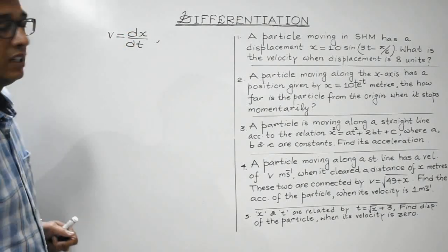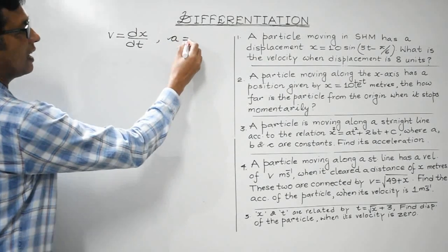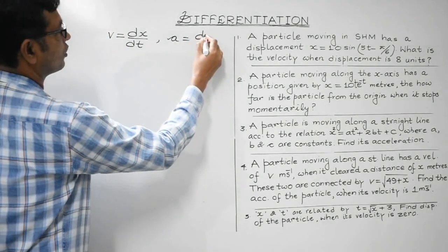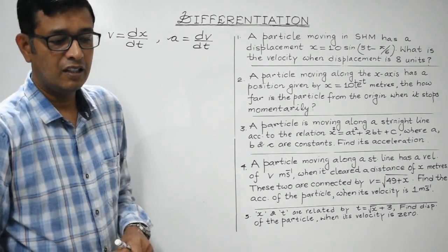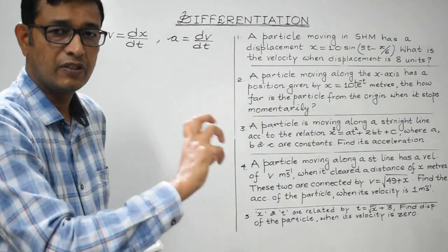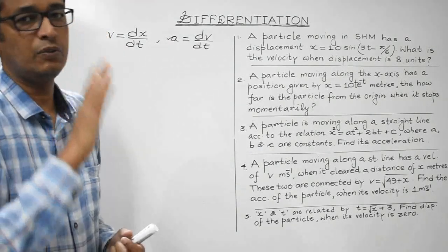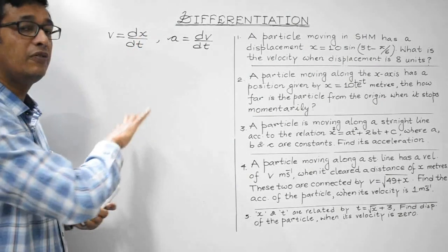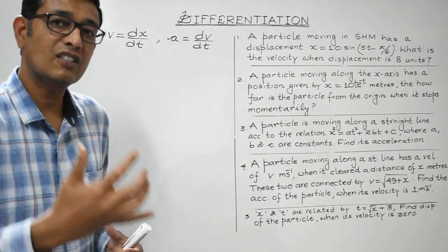Instantaneous velocity is read as the differentiation of displacement with respect to time. Similarly, instantaneous acceleration is given by the differential coefficient of velocity with respect to time. So if a body is in motion and its displacement varies with time through a given relationship, we can determine velocity by differentiating displacement with respect to time, and acceleration by differentiating velocity with respect to time.